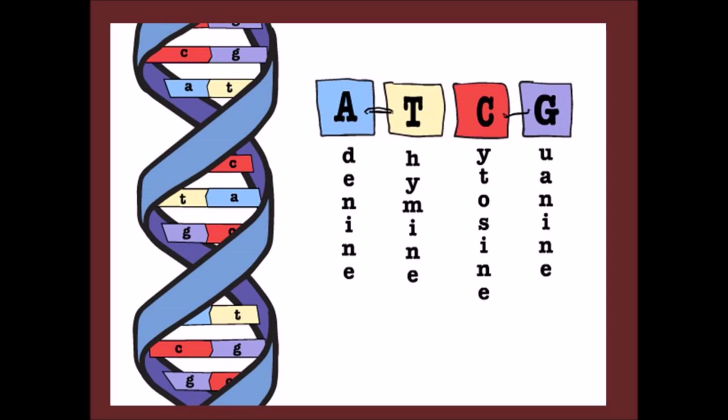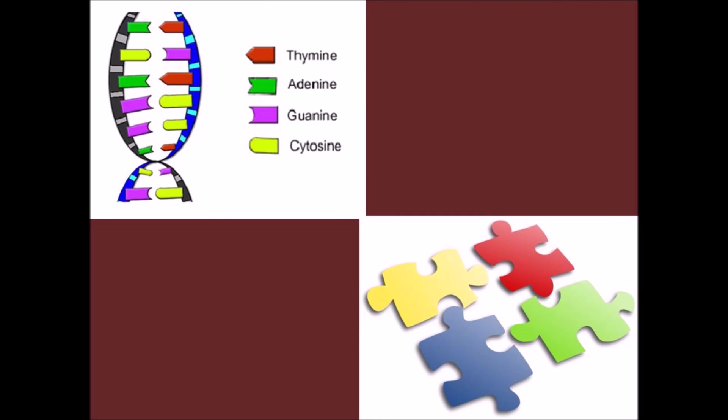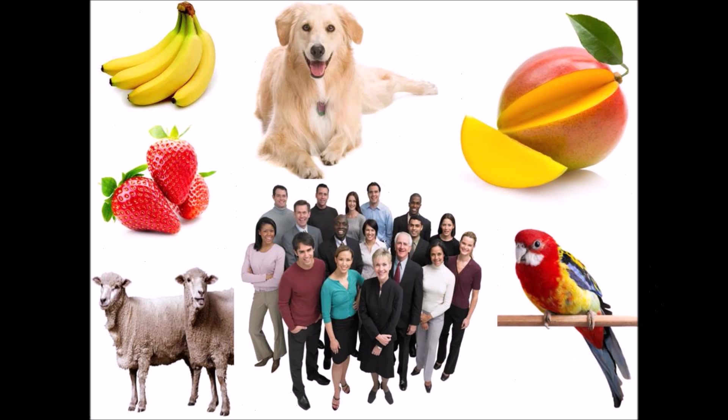The bases don't like to be by themselves, so they always pair up with a friend — but they are very choosy about their friends. A and T are best friends and always hang out together; G and C are best friends too and always hang out together. Another way of looking at it is that A, T, G, and C are like jigsaw pieces — A and T fit together, C and G fit together. You cannot force a jigsaw piece to fit in the wrong place.